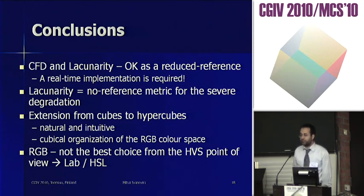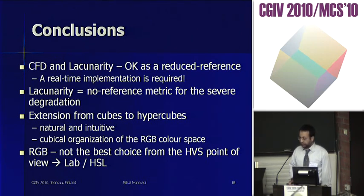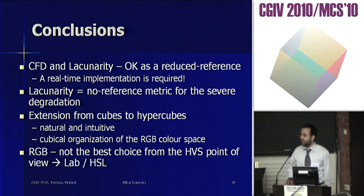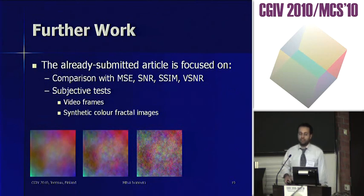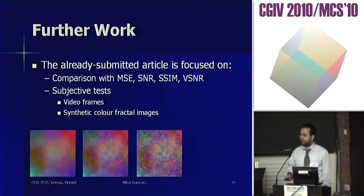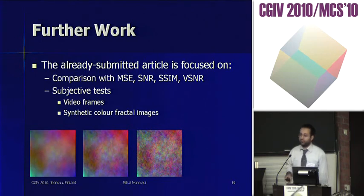Even if the RGB color space is not a perceptually uniform color space, we use the Minkowski infinite norm when counting how many pixels fall inside the hyperboxes. From the human vision point of view, RGB may not be the best color space, so we envisage developing the method in LAB or some other perceptually uniform color space. For further work, a coming paper will include a comparison with existing video quality metrics and results from subjective tests with video frames from the test sequences and with synthetic color fractal images we generated.